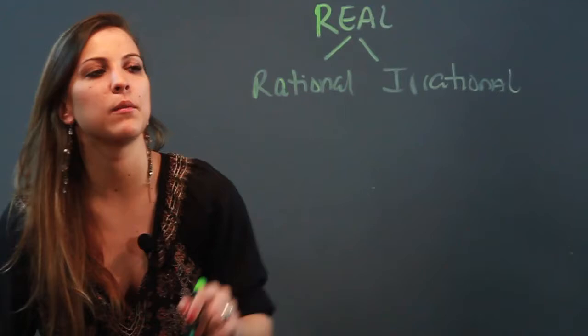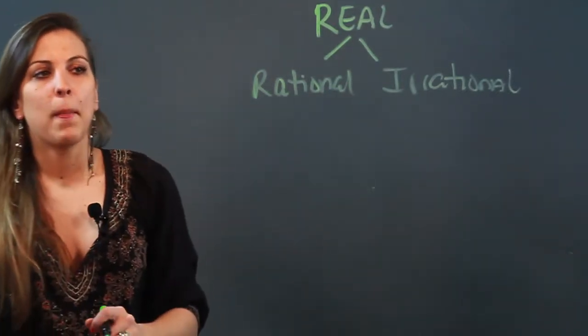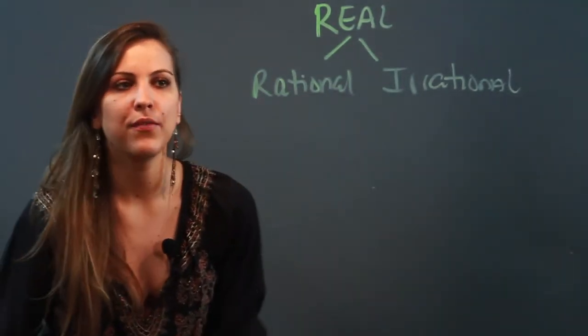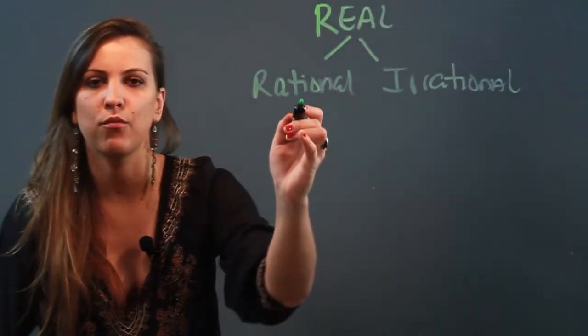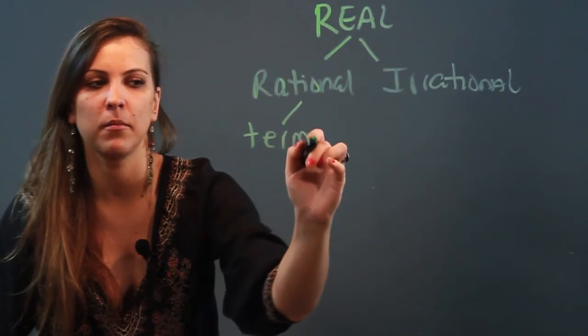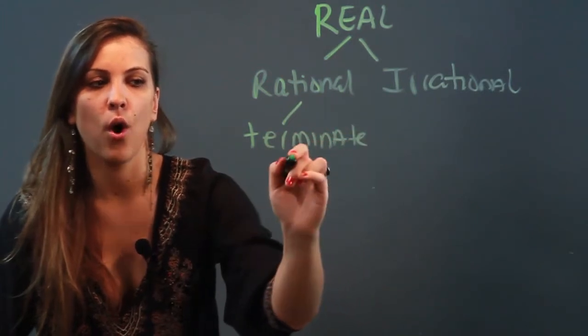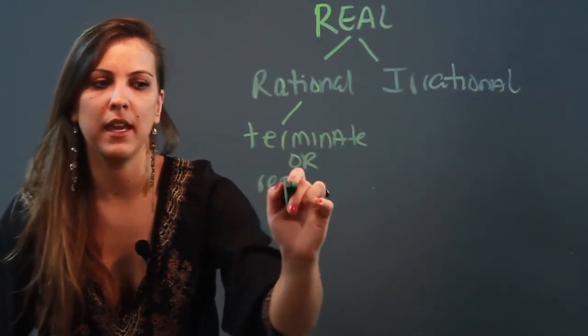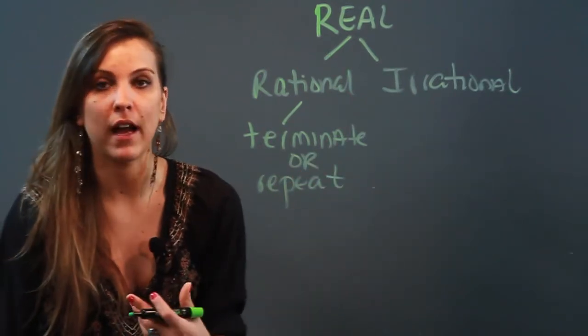Okay, and there's some ways that we can remember their differences. It depends how they're written. So if they are written as decimals, what you have to remember is that rational numbers either terminate—and when I say terminate I mean stop—or they repeat.